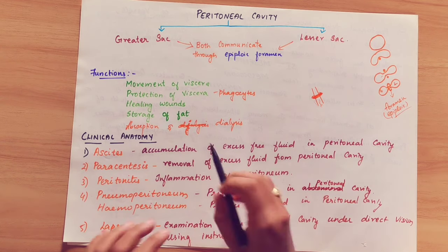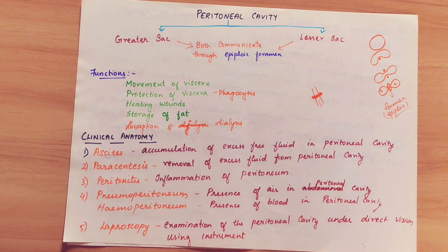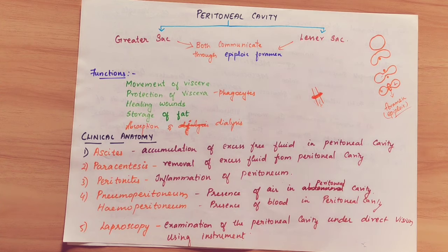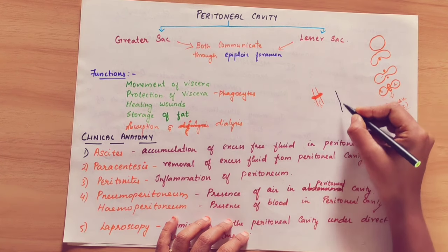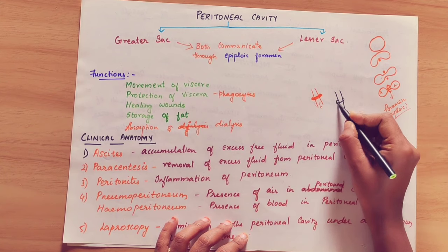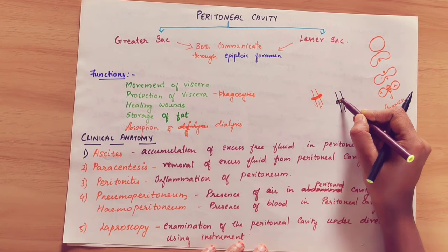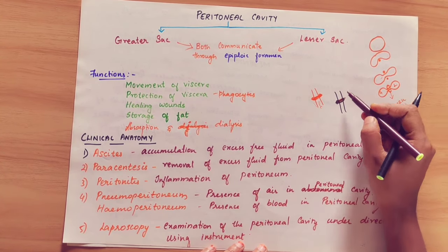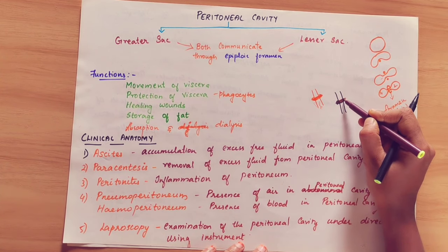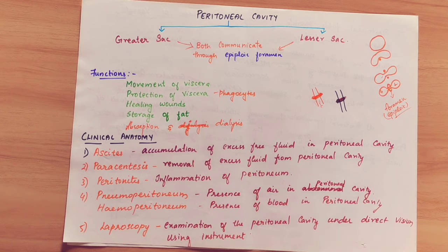The next function is healing of wounds. The visceral layer is made up of mesothelial cells. Mesothelial cells can easily transform into fibroblasts. Fibroblasts are wound-healing cells that form scar tissue, so wounds can easily heal. However, this healing capability of mesothelial cells may also cause blockages in hollow organs.